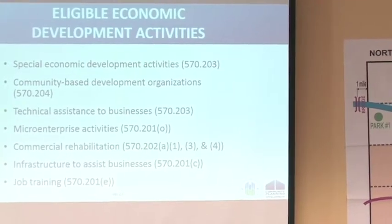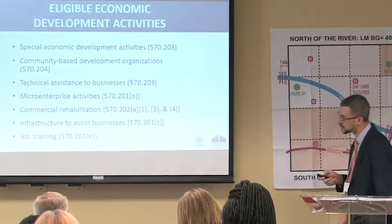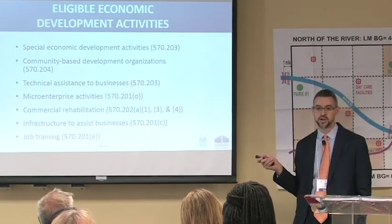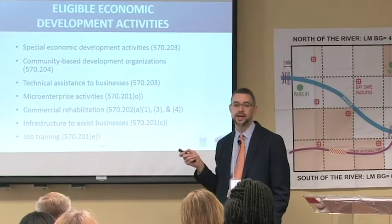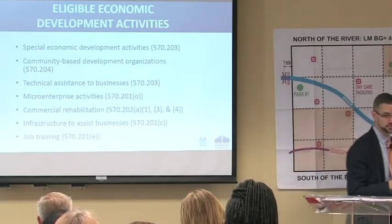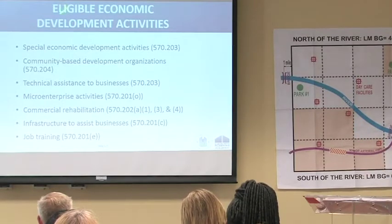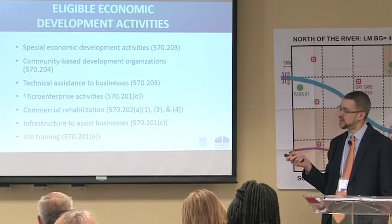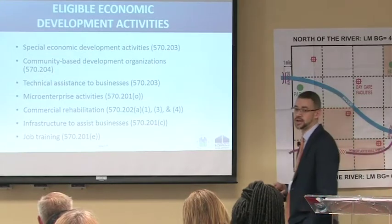Put a star by technical assistance, micro-enterprise, commercial rehab, infrastructure, and job training. Each one of those could also be a special economic development activity. They can be standalone or they can be a component of a special economic development activity — it all depends on what you're trying to achieve and how you document it. We have special ED, CBDOs as delivery mechanisms, and then these other standalone matrix codes in IDIS.